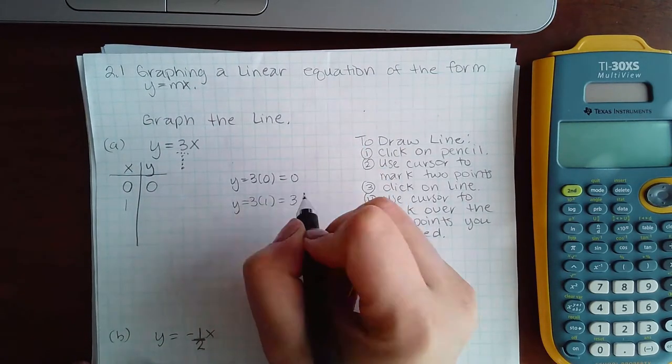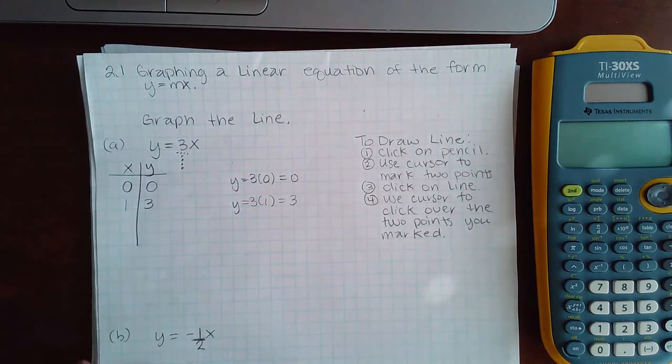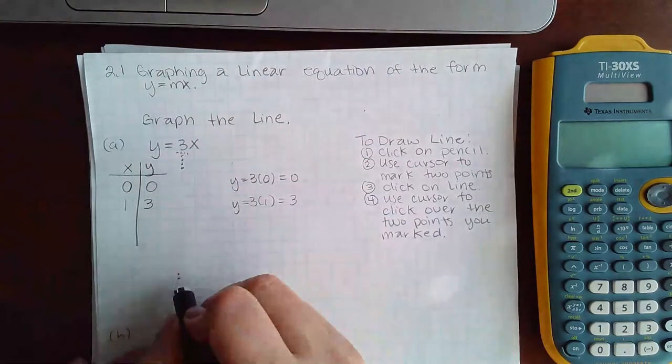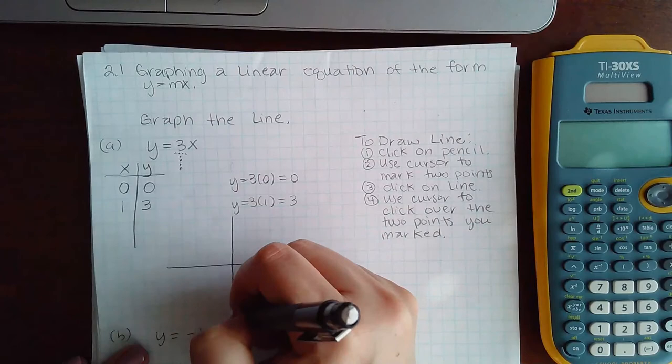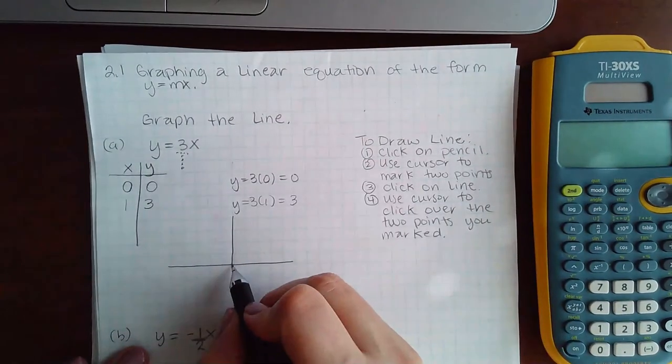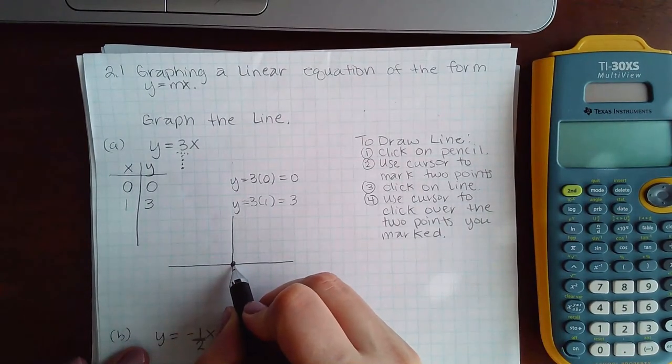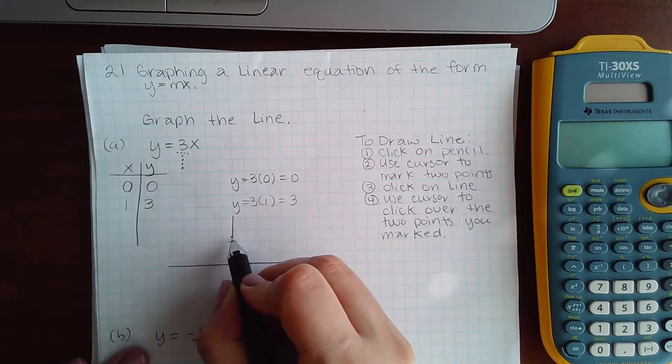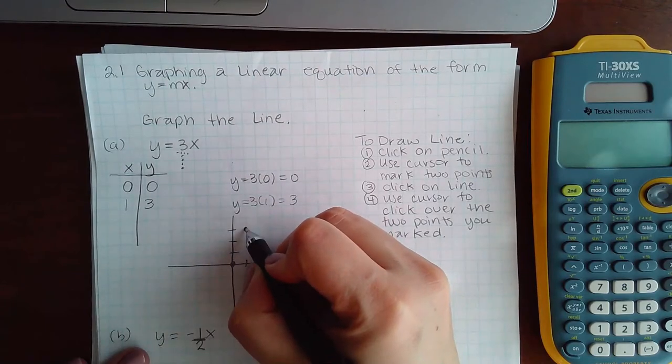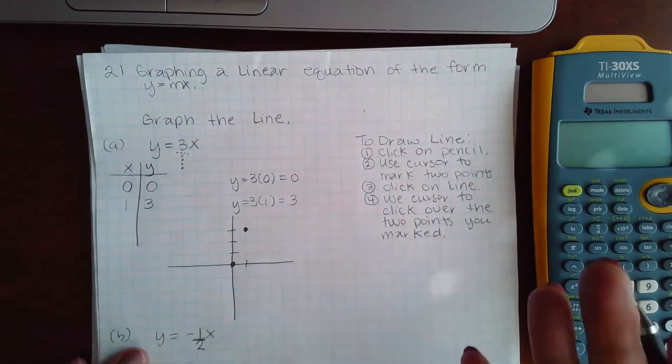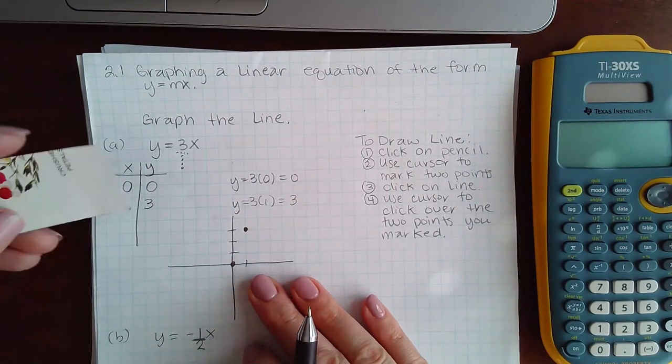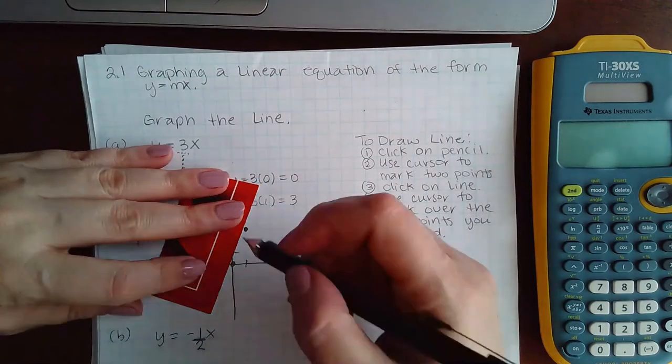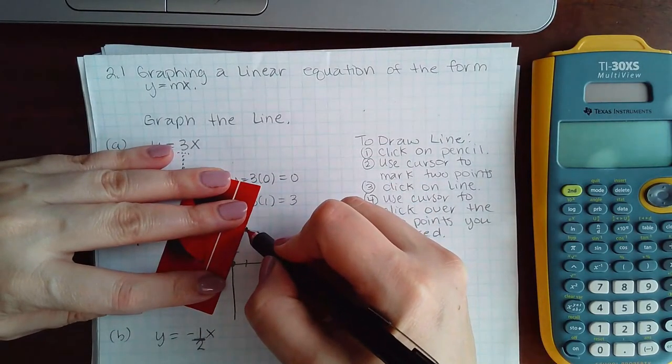All you need is two points to graph a line. So I'm going to draw a coordinate system here, and I'm going to plot zero zero, which is here, and then one and one two three, which is here. Now, I can do this on paper and then just connect the dots. It's not complicated to do it on paper.